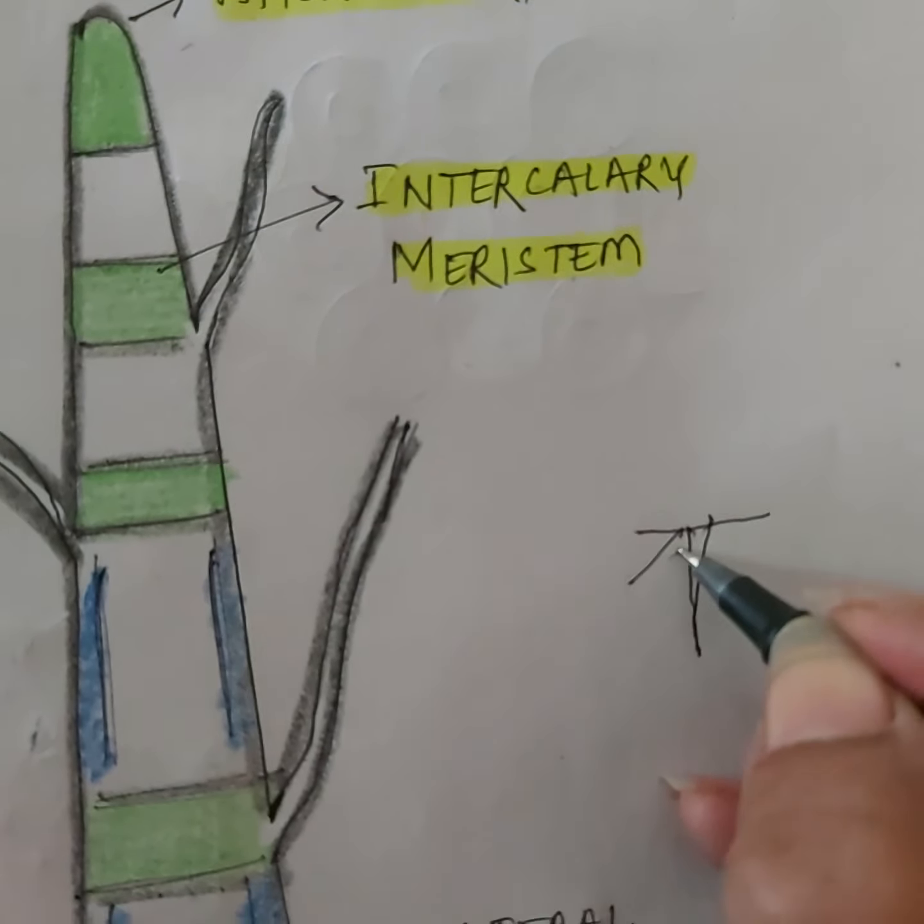On the tips of the roots and root hairs, this tissue — the apical meristematic tissue — will be present. When the cells of the apical meristematic tissue divide and increase in number, they will increase the length of the root tip and the shoot tip. So basically, division of the cells of the apical meristematic tissue leads to longitudinal growth of the root tips and the shoot tips or branches.